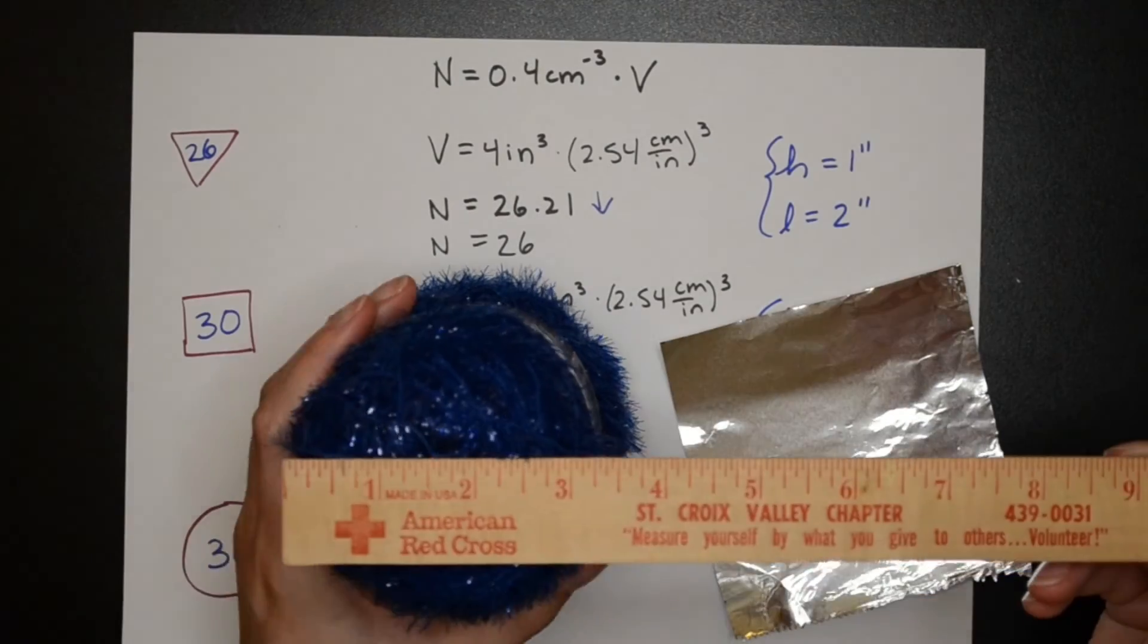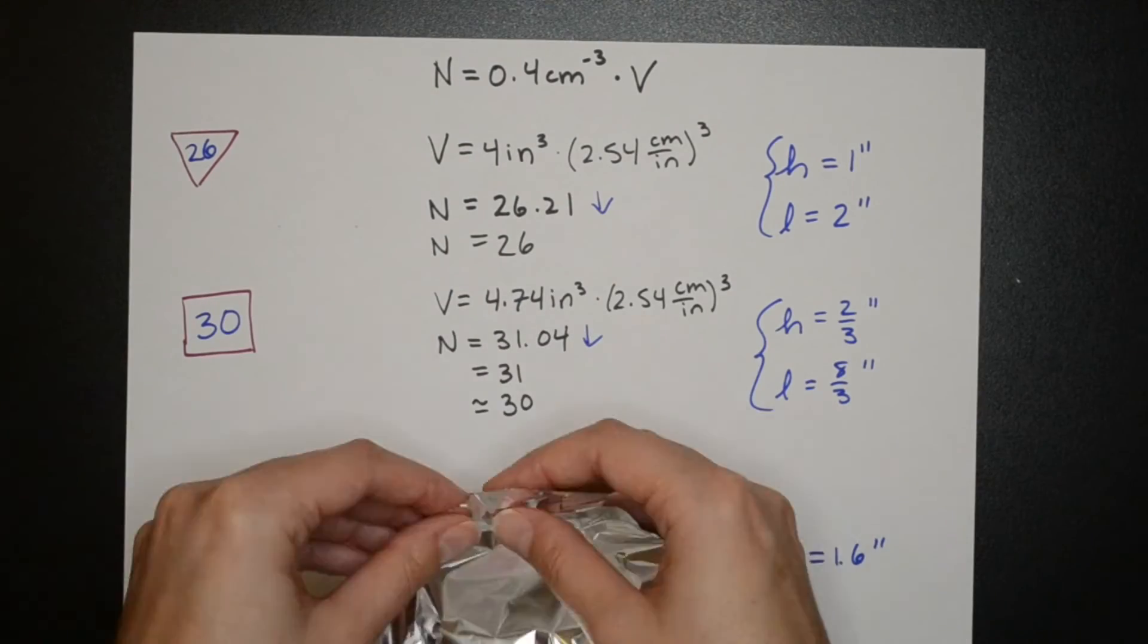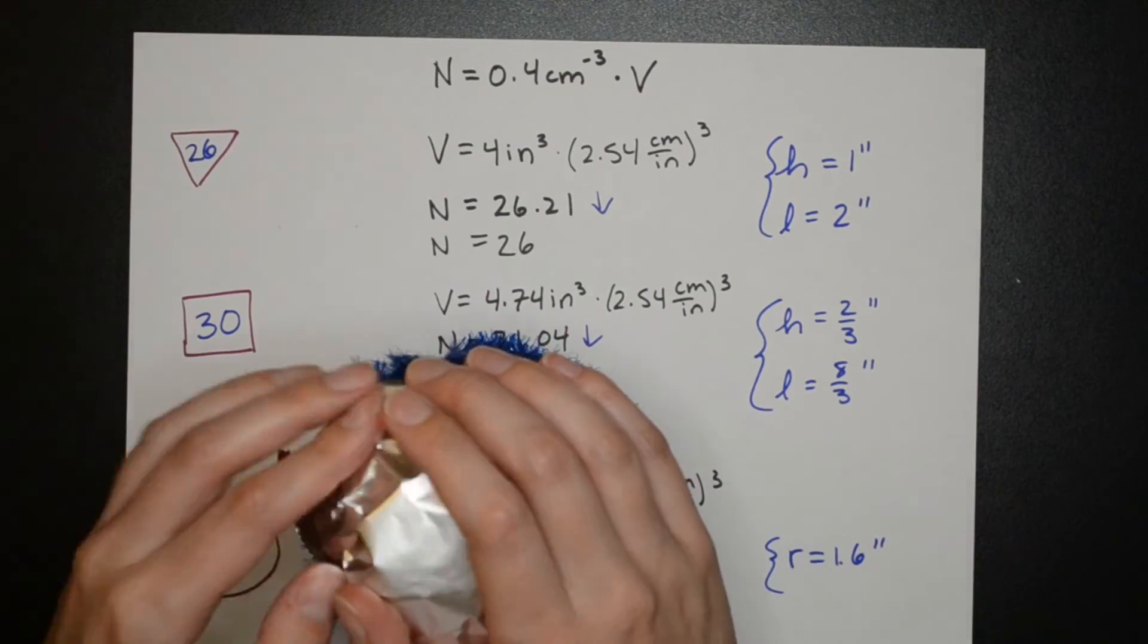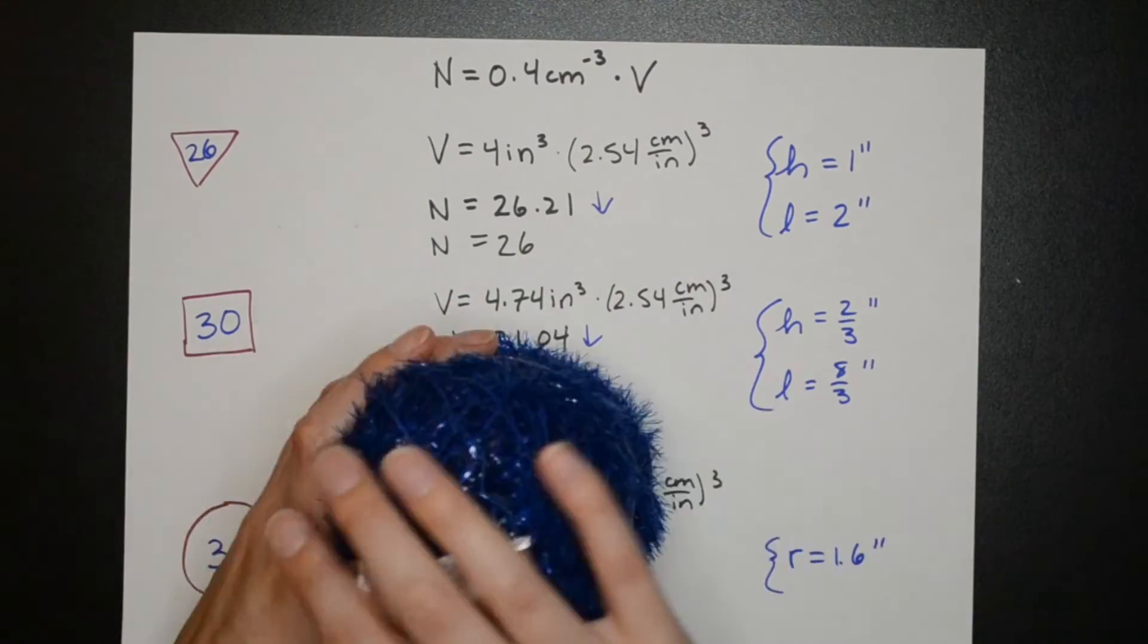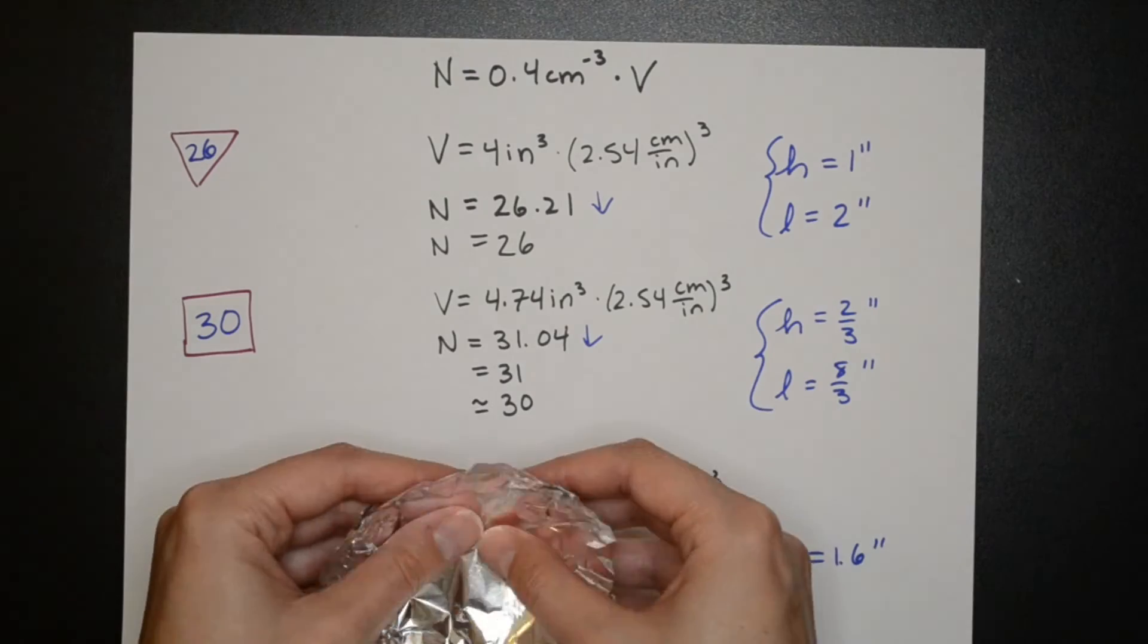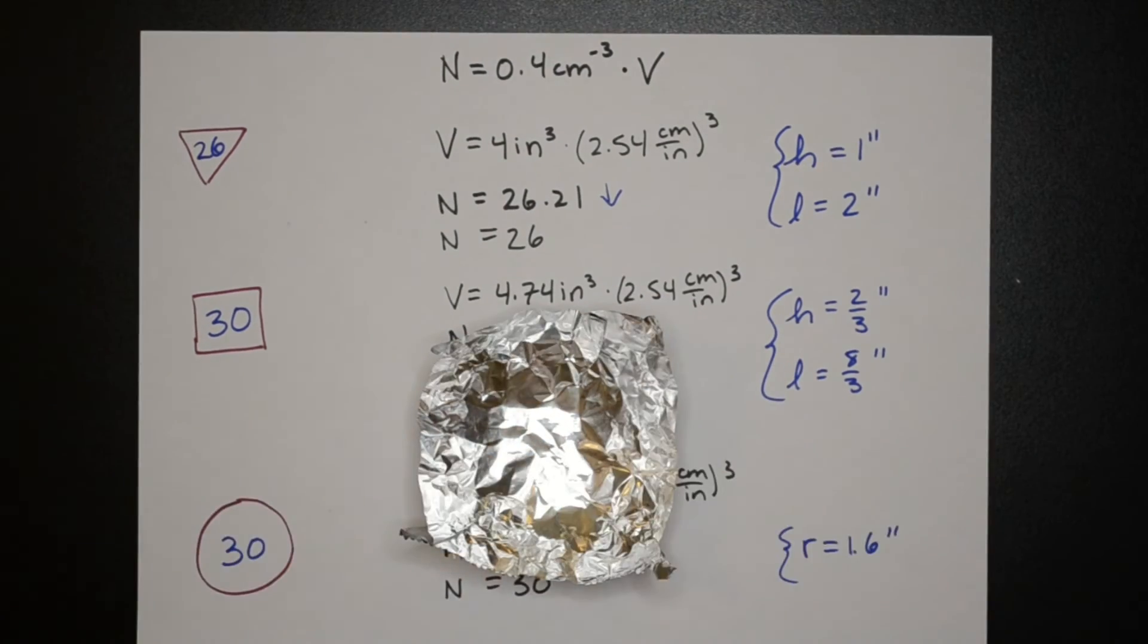Now for the sphere. I'm going to use something that has a spherical shape to just mold the aluminum foil around. The best thing with the closest radius I could find was a skein of yarn but a ball would have been better.